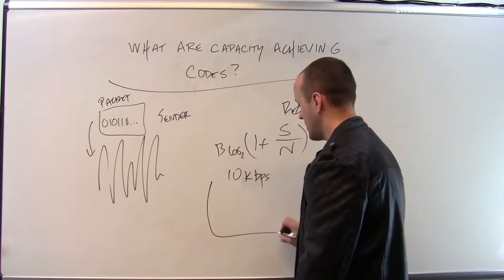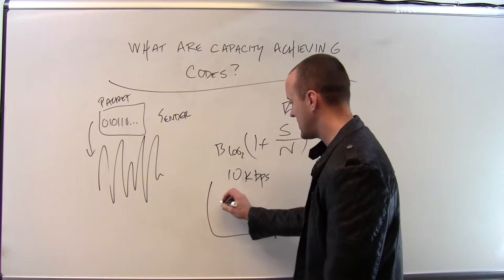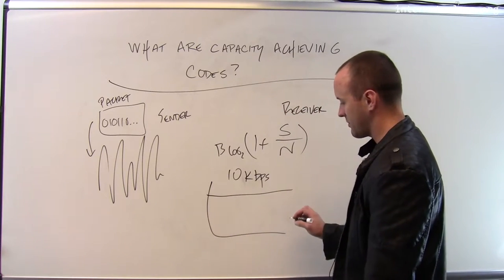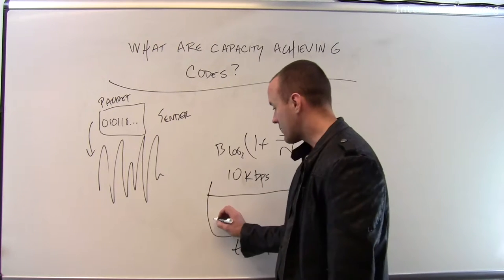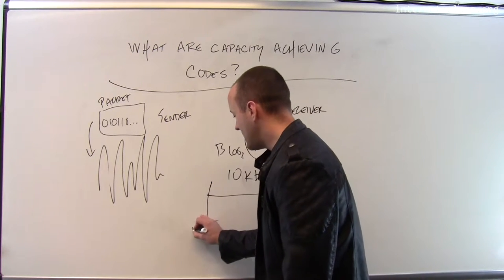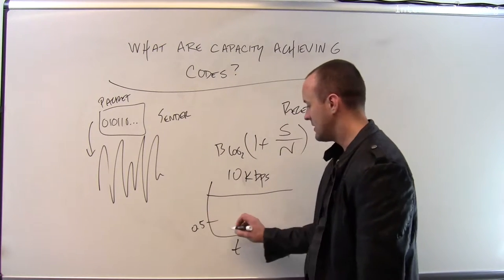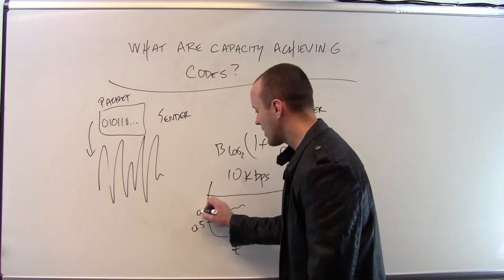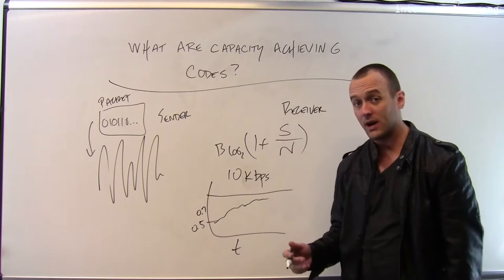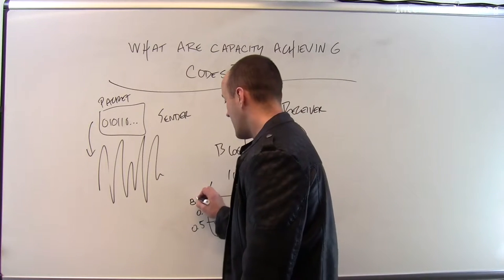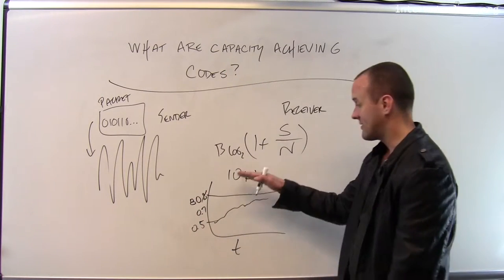You can imagine that here's the capacity that I'm actually achieving, here's the limit of 10 kilobits per second, and here's time. What's been happening is the earliest wireless radios maybe got half of the Shannon limit. And then over time I got a little bit more, 0.7, and at some point I'm actually doing pretty well. So I'm getting maybe 80% of what I'd be able to achieve based on this bound.